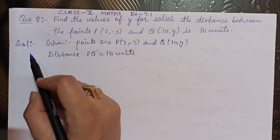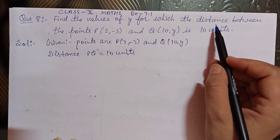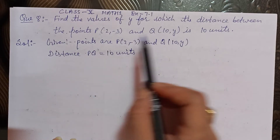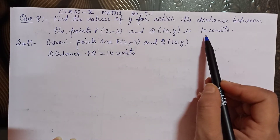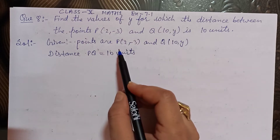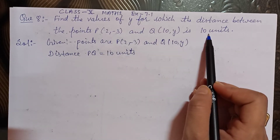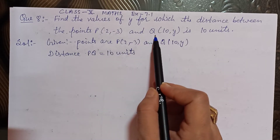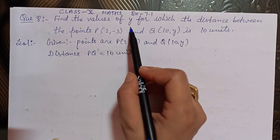We are given the value of y and we are also given that the distance between P and Q is 10 units. So what do we do? We are given the distance between these two points, and we find the distance between them, equate them, and take the value of y.